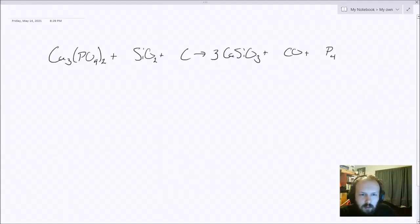I then have the silicon. There's going to be three on the right and I have only one on the left, so I'm going to put a three in front of that silicon. So far, the calcium and silicon are balanced.